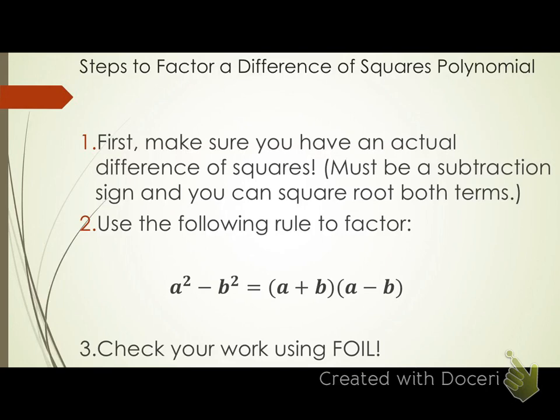Are there any questions about any of these steps? I'll give you a couple more minutes to write this down. I'll go over the rule again just in case you were writing and couldn't pay attention. a squared minus b squared would be our polynomial. I take the square root of my first term and it gives me my a values. I take the square root of my second term, that gives me my b values. Make one a plus sign, one a minus sign, you've got your problem factored.